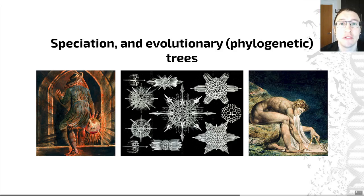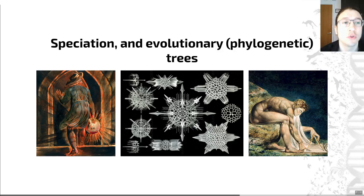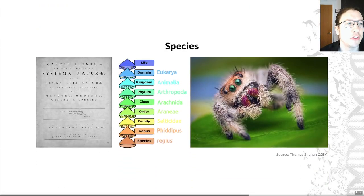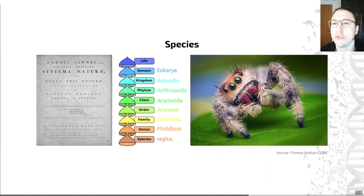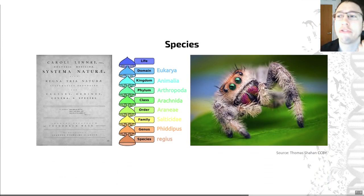This last video looks at some high-level concepts such as speciation and evolutionary trees or phylogenies. These are high-level concepts for which evolution forms a context and a framework to help us understand them.